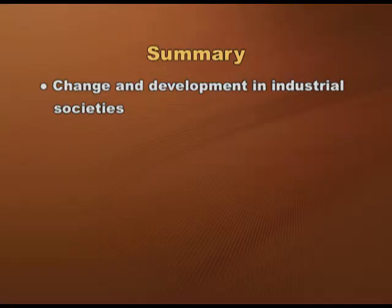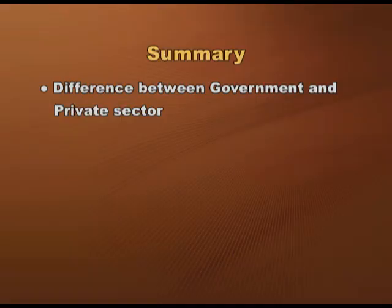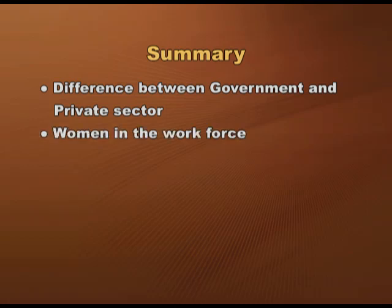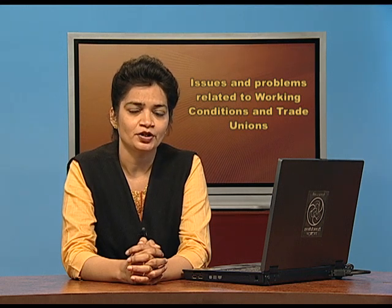To conclude, this chapter covered change and development in industrial societies. We discussed features and drivers of industrial society, industrialization in India, various sectors of the economy — primary, secondary and tertiary, organized and unorganized sectors, government and private sectors, women in the workforce, gender segregation in employment, finding jobs, working conditions, and the articulation of working-class interests through trade unions. This is a brief overview of industrial society — enjoy reading the chapter. Thank you.